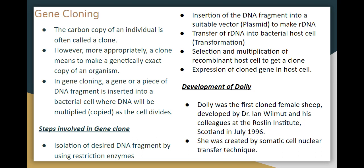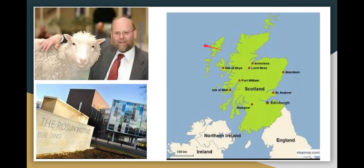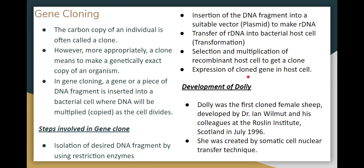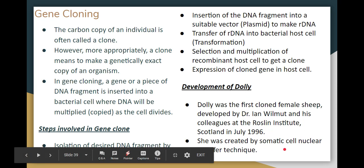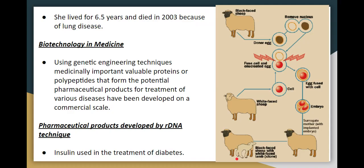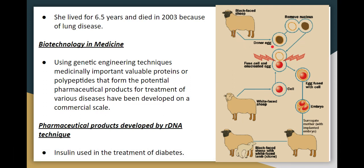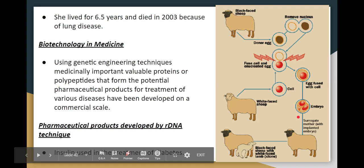Next is the development of Dolly. The clone known as sheep Dolly was the first cloned female sheep, developed by Dr. Ian Wilmut. This was achieved in July 1996 using the somatic cell nuclear transfer technique. In this process, the egg is fused with a cell, the embryo is implanted in a surrogate mother, and the offspring was a white-faced lamb — the sheep Dolly.